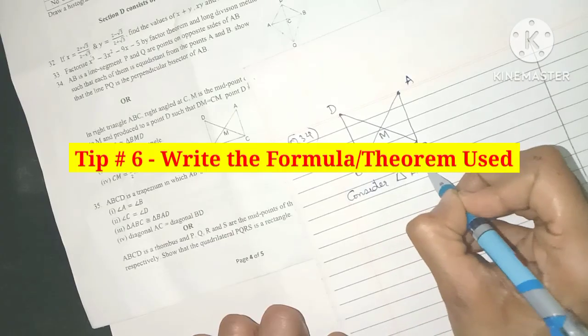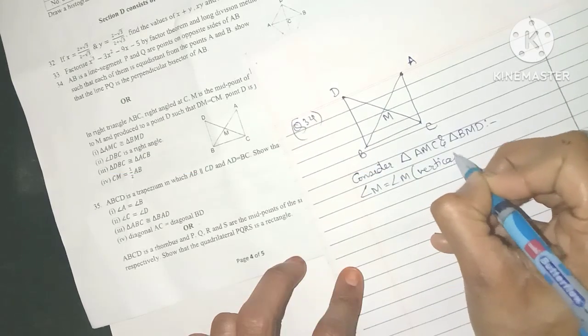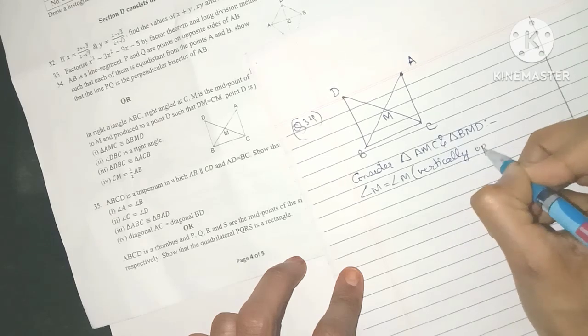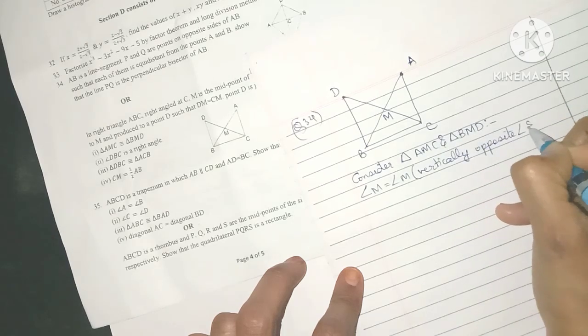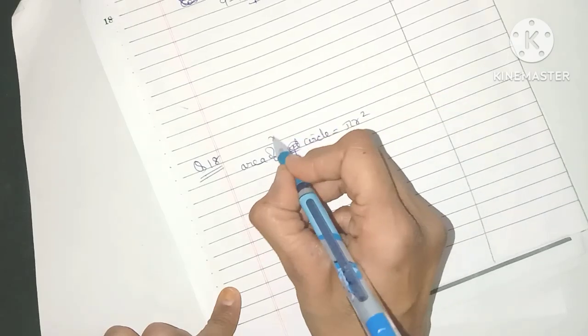The next step is to mention the formulae or the theorems used. We may think of it as a waste of time, but it's extremely important to write in each answer very clearly the reasoning, the formulae or the rules, the theorems used.